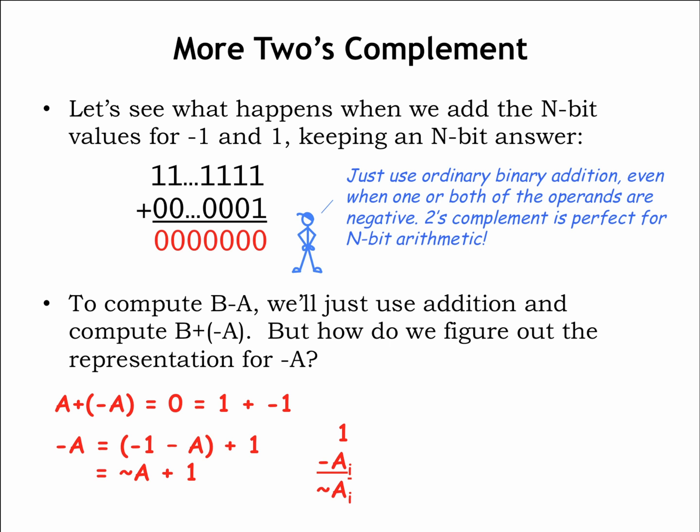As we saw above, the 2's complement representation for negative 1 is all 1 bits, so we can write that subtraction as all 1's minus the individual bits of a: a0, a1, up to a_n.